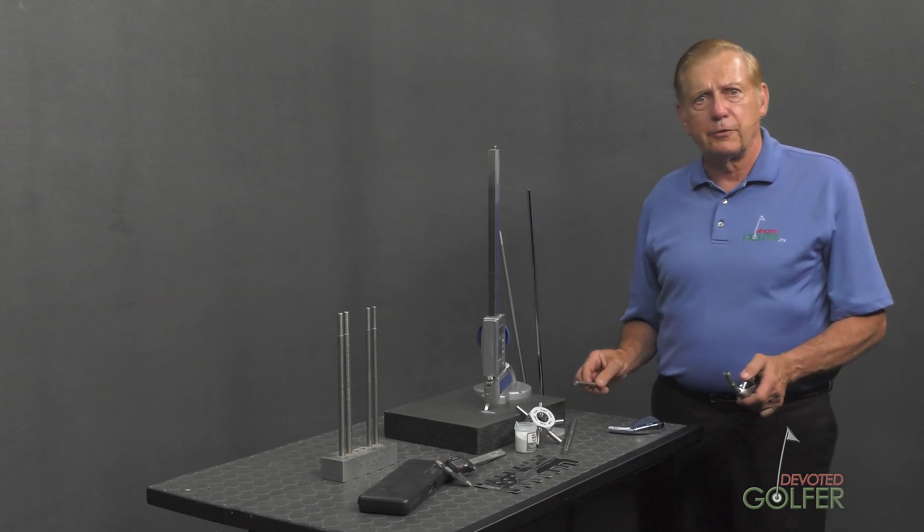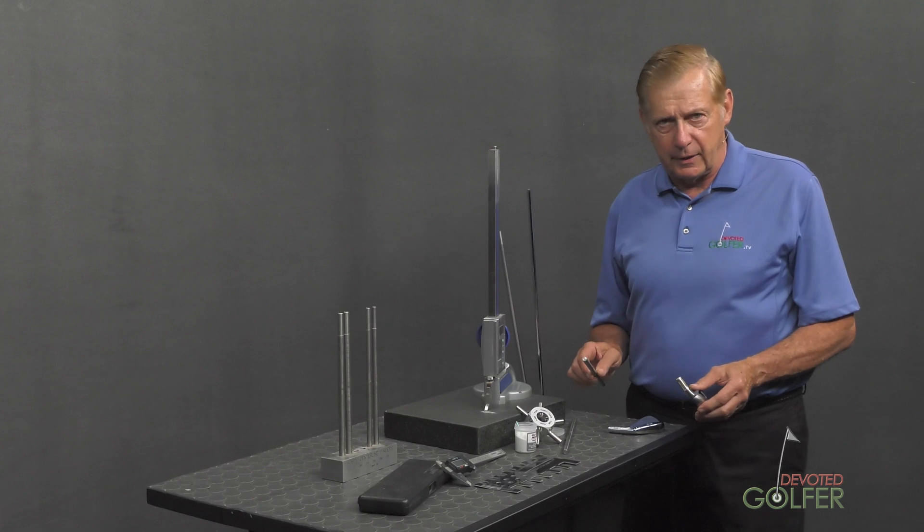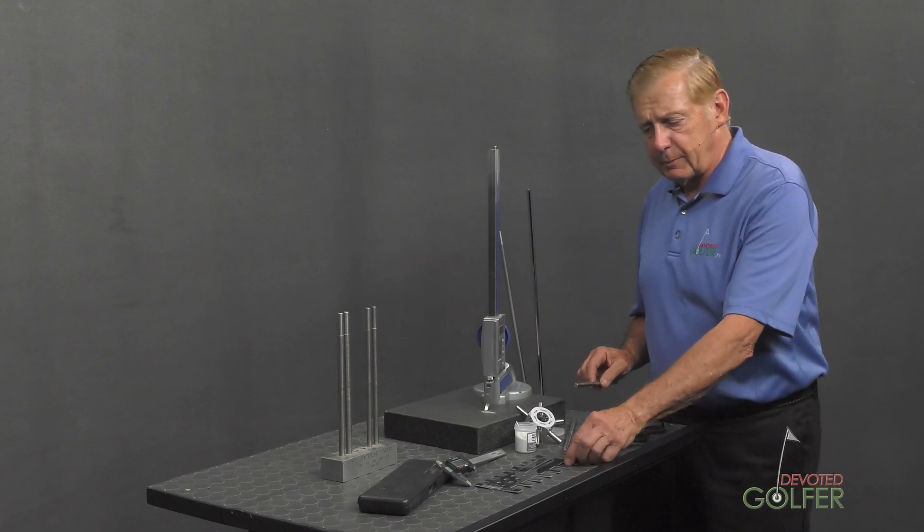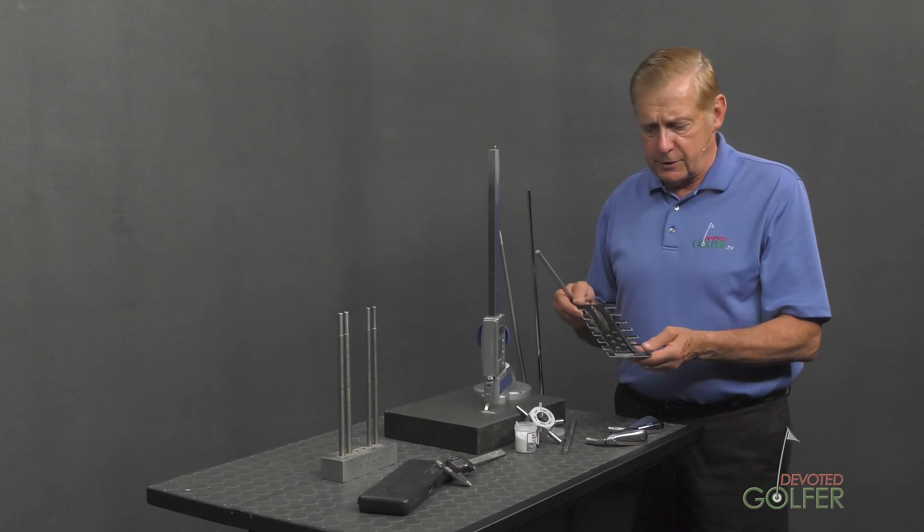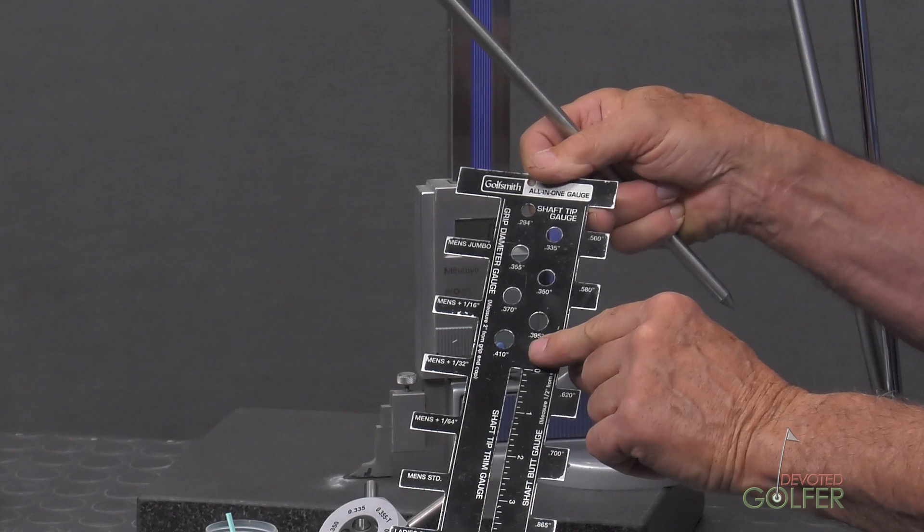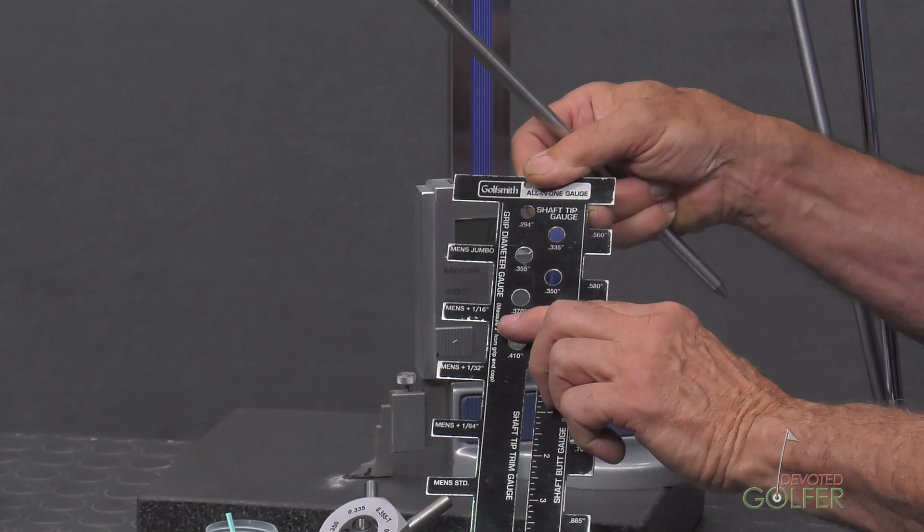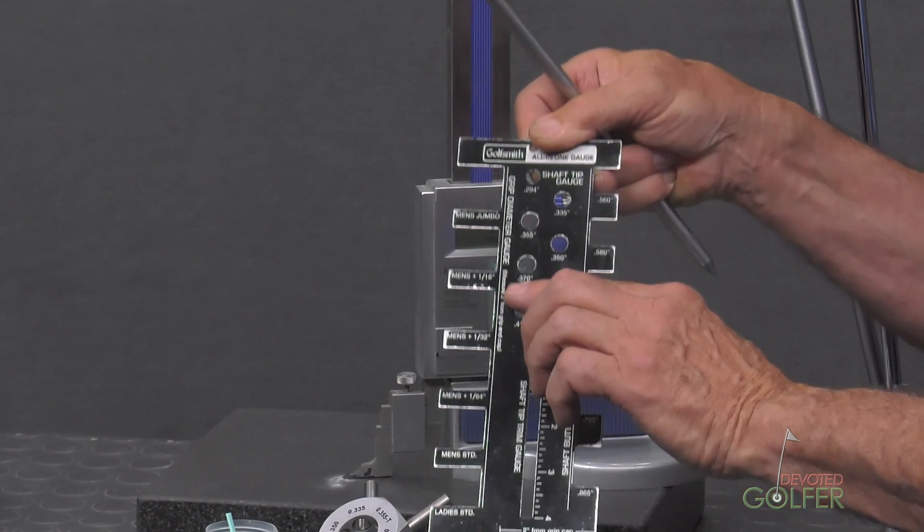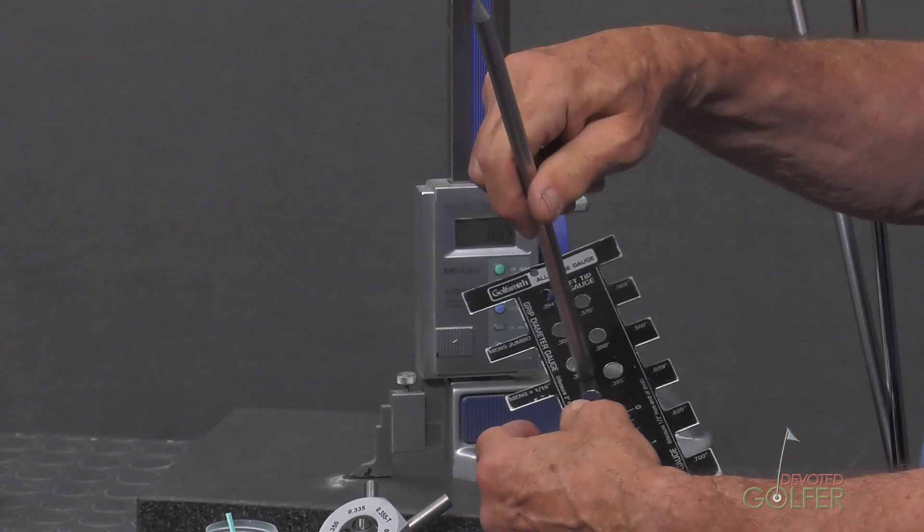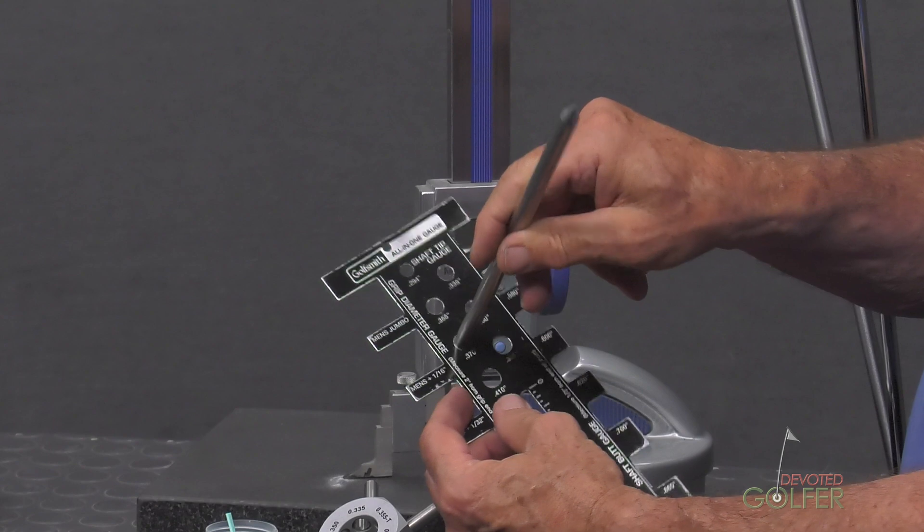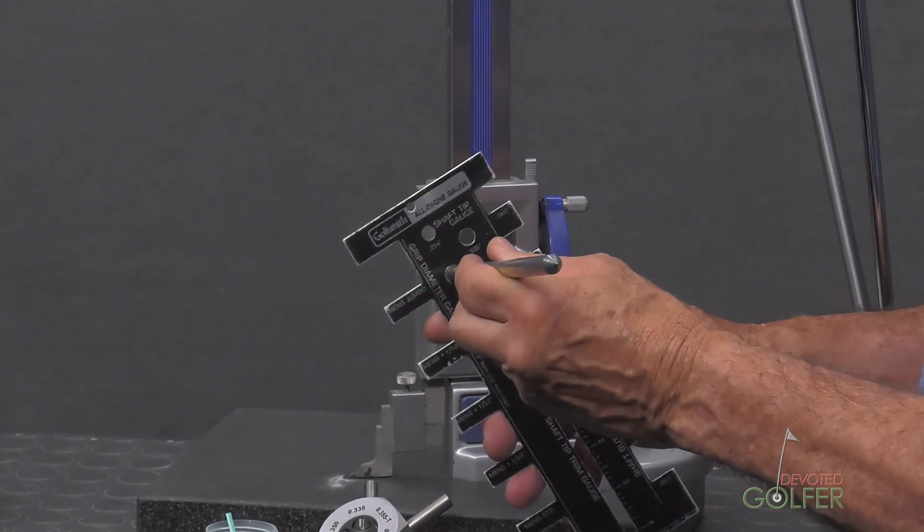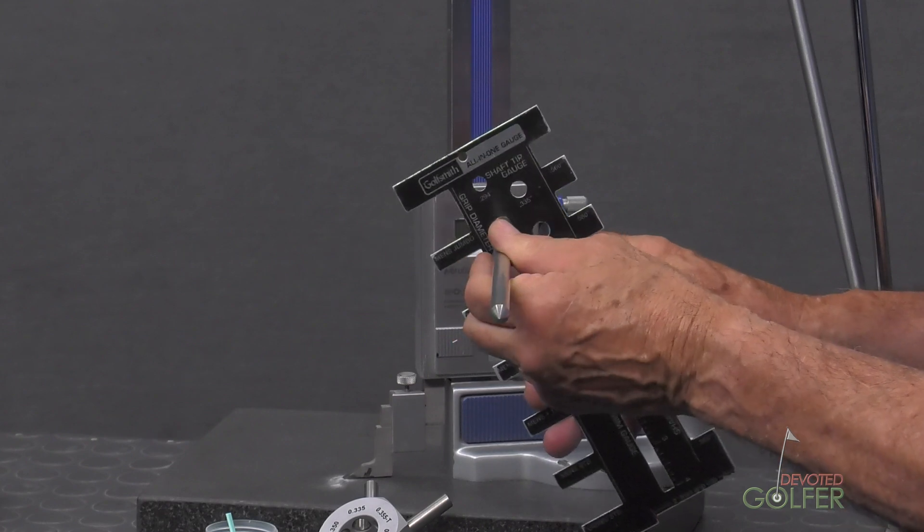Now let's look at some other tools for measuring shaft tips and hosel diameters that I've used over the years. This is a grip gauge, or shaft tip gauge. Here's 0.370, that's your parallel shaft, and I've got a parallel rod in my hand. I put it into the hole and it's a fit. When I try to put it into the 355, which is your tapered hole, it doesn't fit.